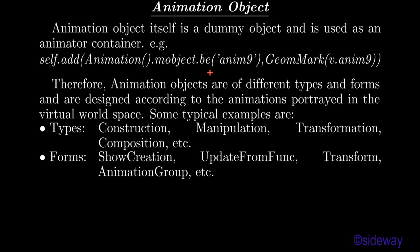Some typical examples — animation types can be: construction, manipulation, transformation, composition, etc. Animation forms can be: ShowCreation, UpdateFromFunc, Transform, AnimationGroup, etc.